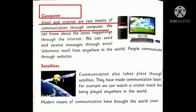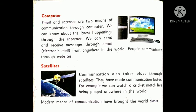Next is the computer. Email and internet are two means of communication through the computer. Through the internet we can know about the latest happenings in the world within seconds. The full form of email is Electronic Mail. Through email we can send and receive messages on the computer, and we can communicate with each other through emails.